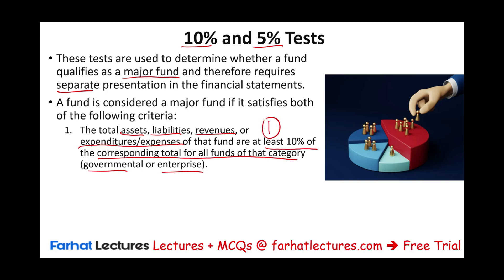For governmental funds, revenues and expenses — or for full accrual — must be at least 10% of the corresponding total of all funds of that category, whether governmental or enterprise. This is test one. For example, we look at a fund's revenue and ask: does it represent 10% of the total revenues of the governmental fund? If the answer is yes, it passes test one.